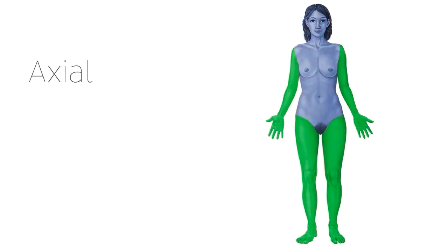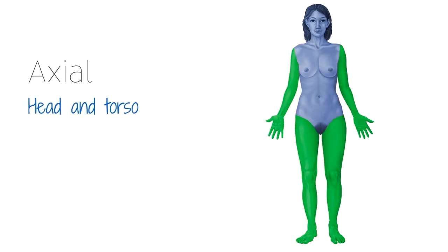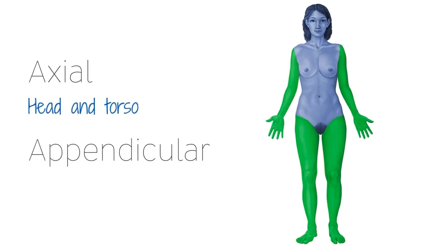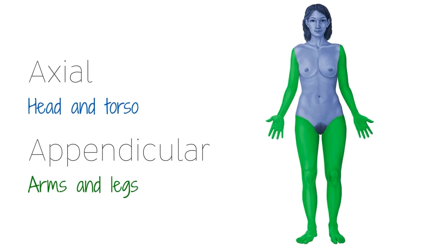The axial region, shown in blue, includes the head and the torso, while the appendicular region, shown in green, includes the arms and the legs. Both regions encompass the anterior and posterior surfaces. The axial and appendicular regions are the broader regions of the body, dividing it into what we would otherwise call the torso and the limbs. Within these regions there are, of course, several smaller regions.